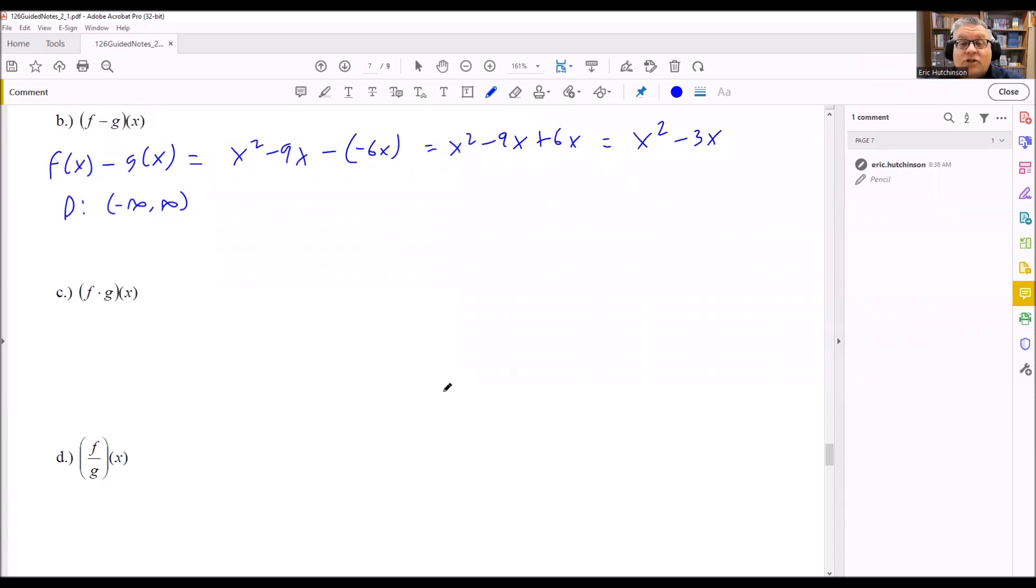Part c, f times g we have inside. That means we want to take f of x and multiply it by g of x. Okay, so I have x squared minus 9x. And I'm taking all this and I'm multiplying it by the g, which is negative 6x. So for this, we can use the distributive property and multiply by each of those.